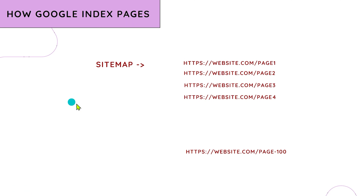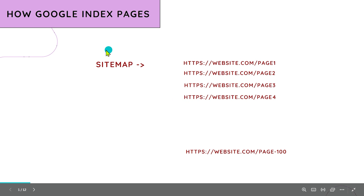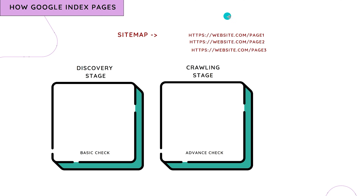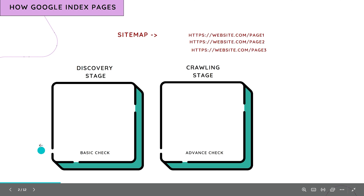To understand this issue, we first need to understand how Google indexes pages from our websites. For example, if your website has pages one through one hundred and these pages exist in your sitemap — or Google knows about them by any means — there is a discovery stage where basic checks happen, and then a crawling stage where advanced checks happen.